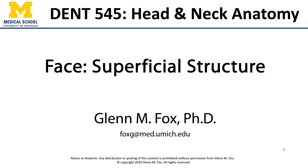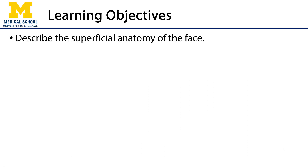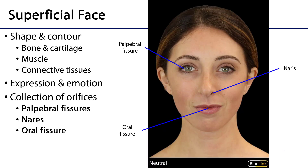Let's talk about the superficial structure of the face. In this video we'll discuss the superficial anatomy of the face. The structure and contour of the face is shaped by the underlying bone, cartilage, muscle, and connective tissues.